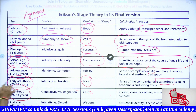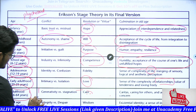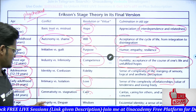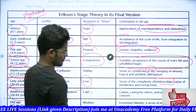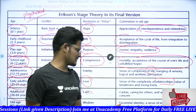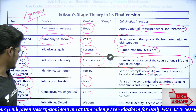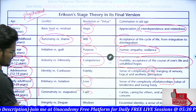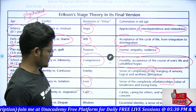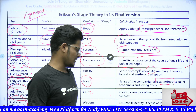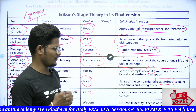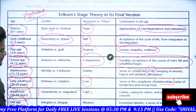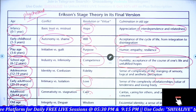Adulthood, twenty-six to sixty-four years, involves generativity versus stagnation, with caring as the virtue. Caring for others, empathy, and concern for others are more prominent in this age. From sixty-five plus — the retirement stage — the conflict is integrity versus despair, and the virtue is wisdom. Existential identity and a sense of integrity strong enough to withstand physical disintegration characterize old age.